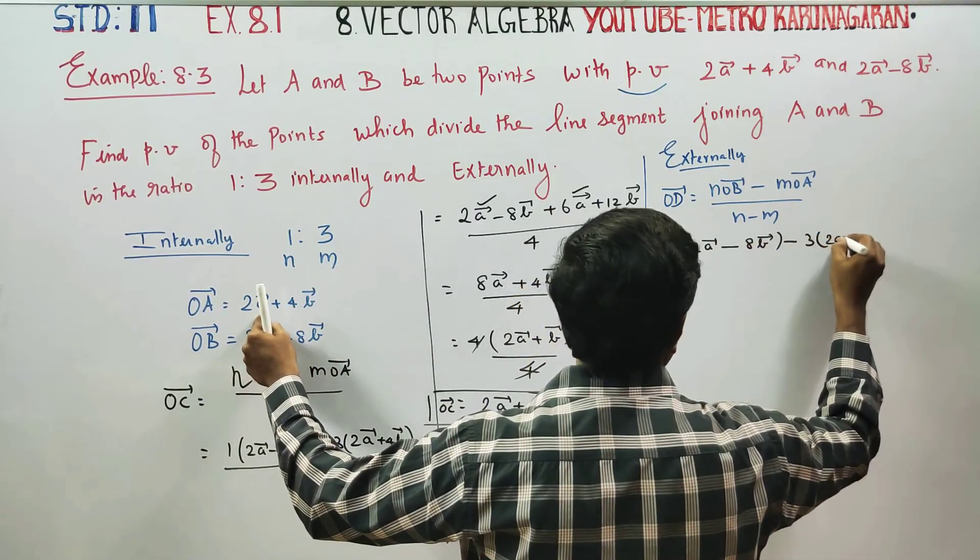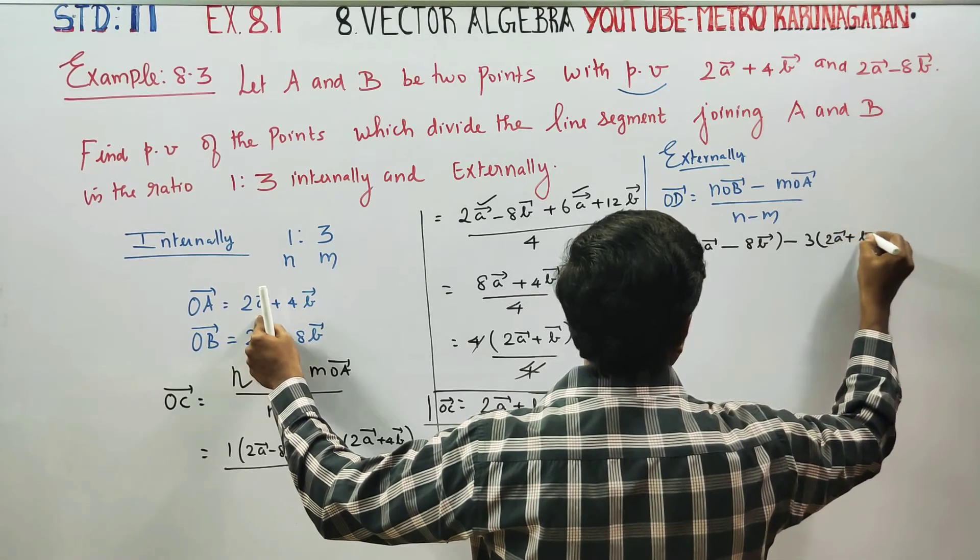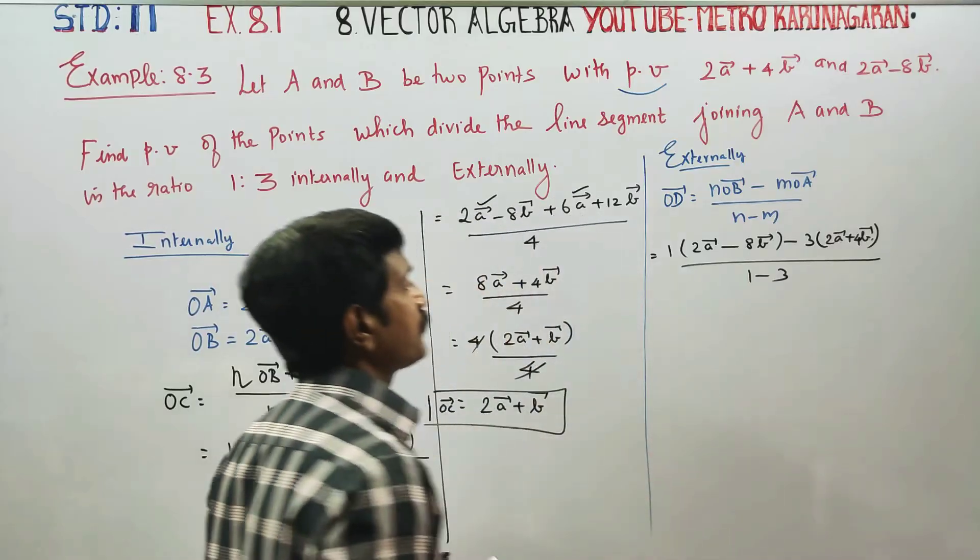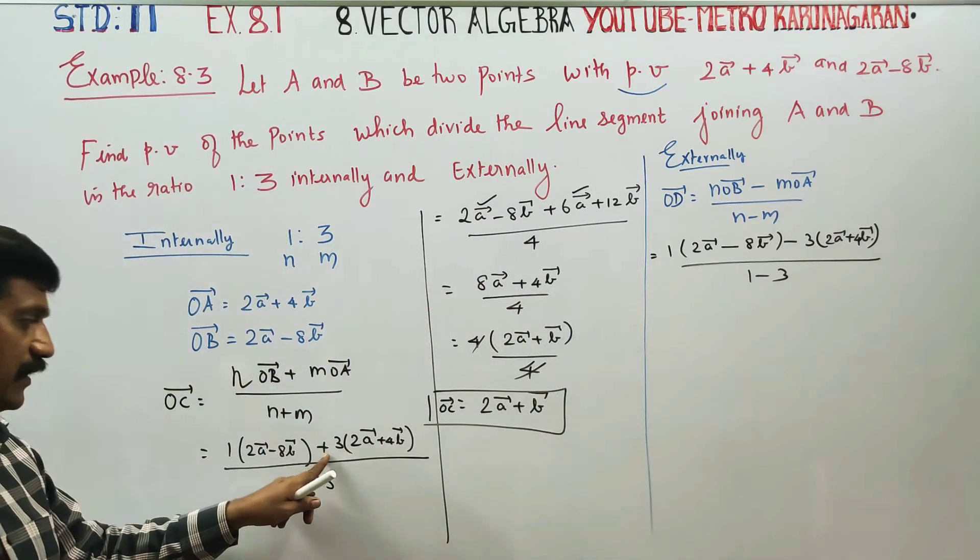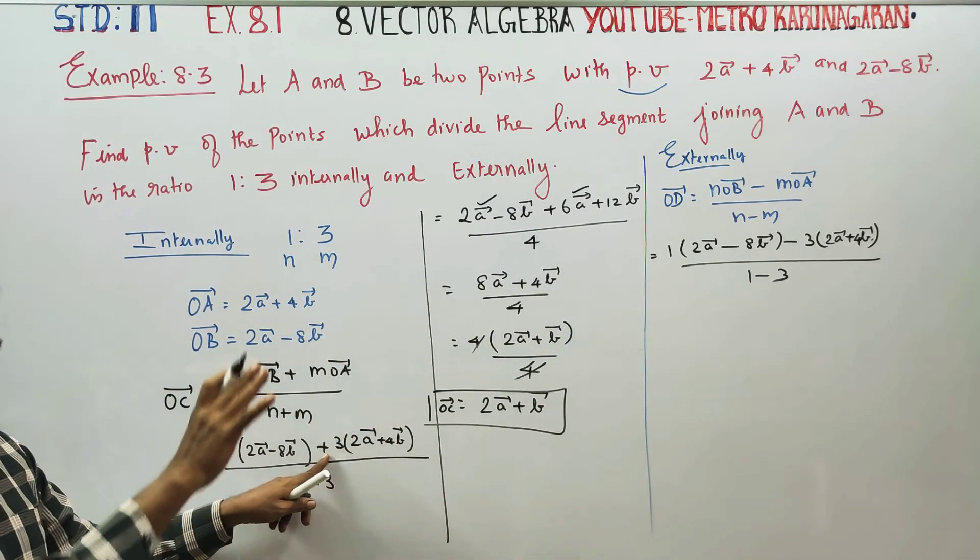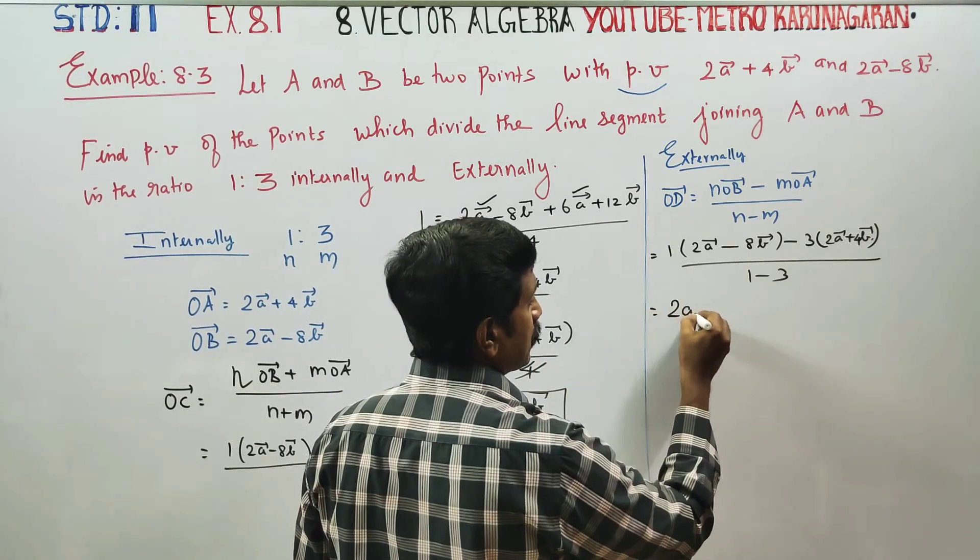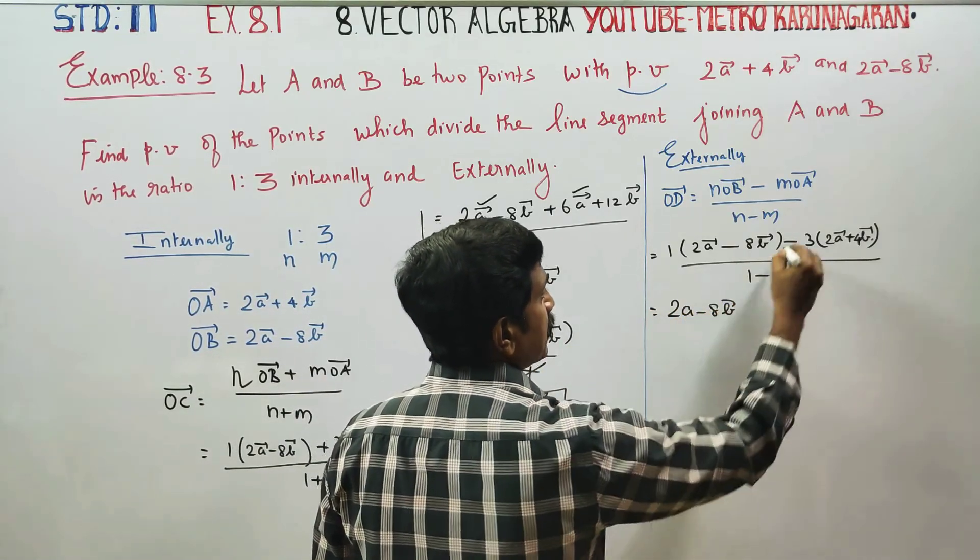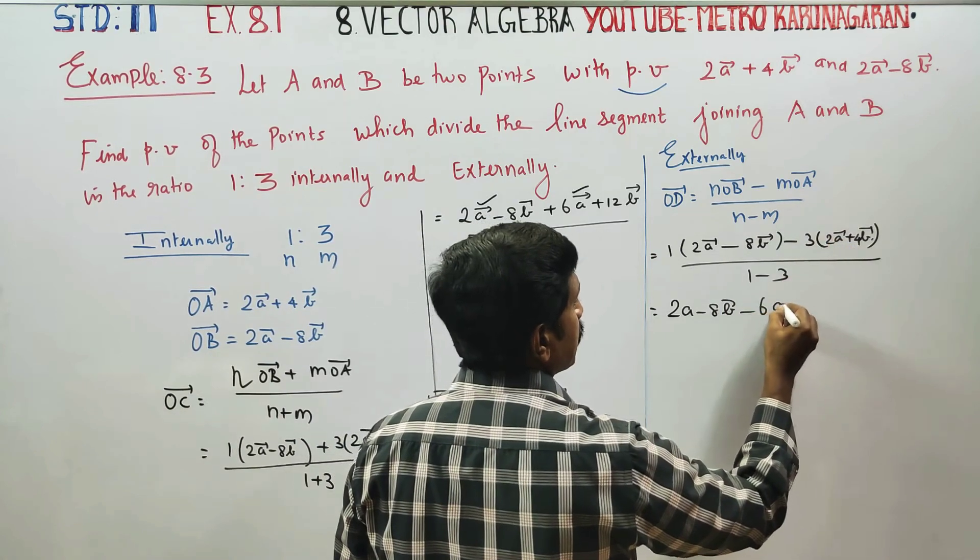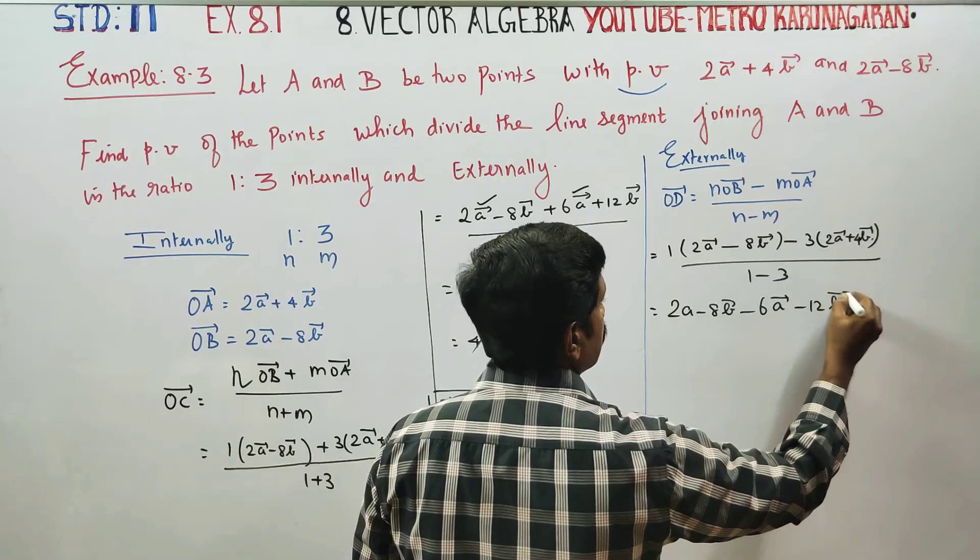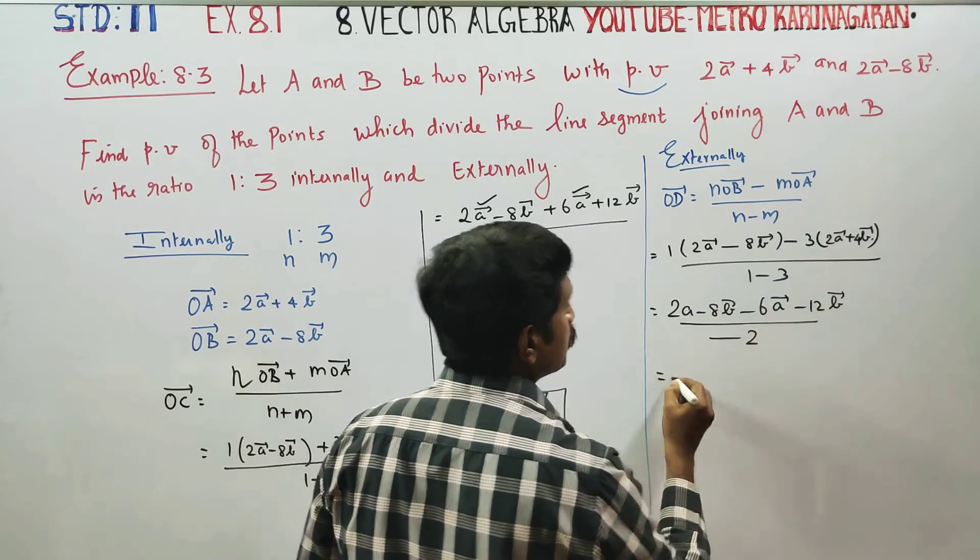n minus m is equal to 1 minus 3. That is equal to 2a minus 8b minus 3 into 2a vector minus 3 into 4b vector, by 1 minus 3 is minus 2.